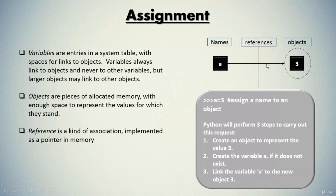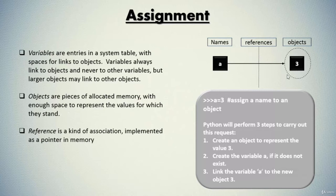Let's understand that with the help of this example. Over here we have a variable named 'a' which is referencing to an object 3. Both the variable and the object are linked through this reference. When you assign a variable a particular object, first the memory is allocated to that object, and after that a reference is created between the object and its variable. Objects are pieces of allocated memory with enough space to represent the values they stand for, and a reference is implemented as a pointer in memory.